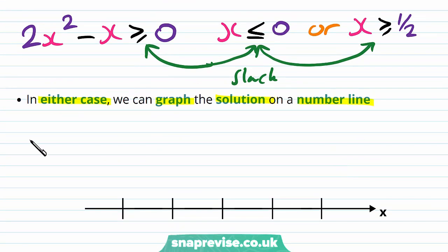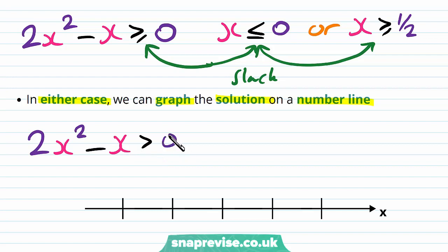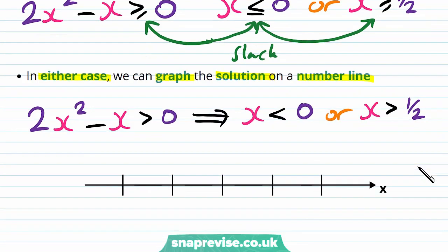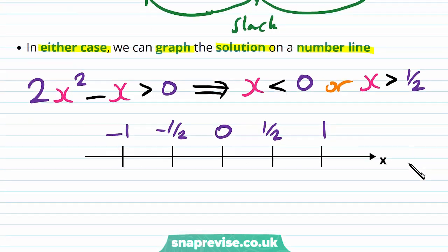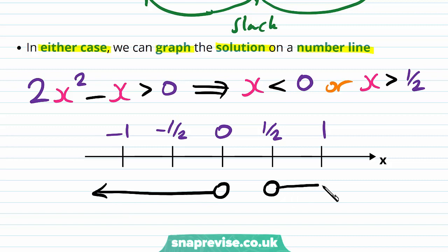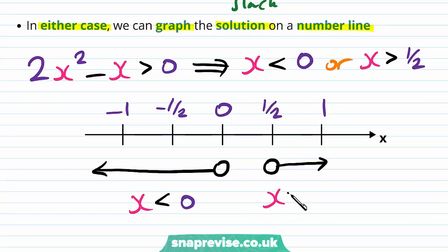Taking our first case, 2x² - x > 0, the solution is x < 0 or x > ½. We plot points -1, -½, 0, ½ and 1 on a number line. We put open circles at 0 and ½ because they are strict inequalities, then an arrow to the left for x < 0 and an arrow to the right for x > ½.